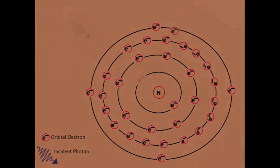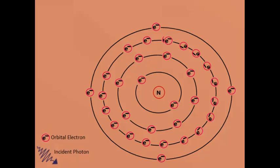As can be seen, the incident X-ray or gamma-ray photon gets completely absorbed by an orbital electron in case of photoelectric effect. There is no photon after it has interacted with the orbital electron.